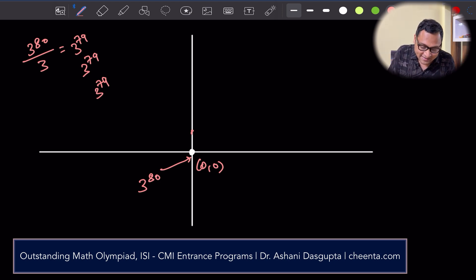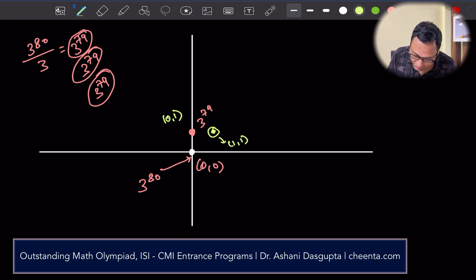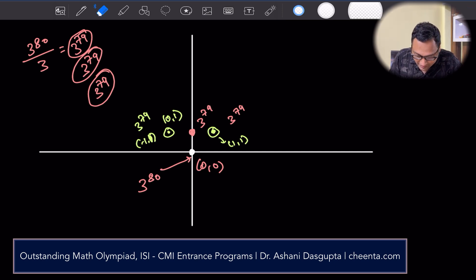So what happens to these particles? Well, one of them goes right up. So now at this position, there are 3 to the power 79 particles. What is the location? Well, this is 0, 1. Another one third goes to the right. So here, again, this is 1, 1. Again, there are 3 to the power 79 particles. And then another portion goes to the left. So this one is 3 to the power 79 here. This is minus 1, 1. So they go up, right, and left. That's all. It's like a scattering. Okay. So that's the step one.